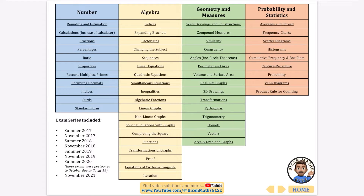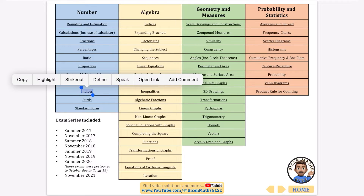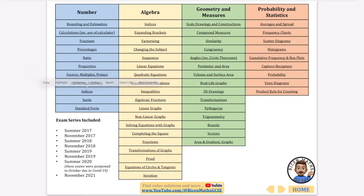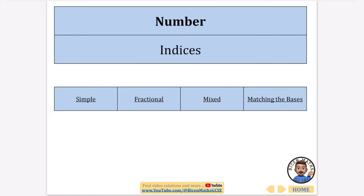I'm continuing with going through every exam question that has ever been asked. In this one we're going through indices — this is indices in the number topic, though it does come up again in the algebra topic. If you want this document it's linked in the description. I've broken it down into different sections: simple, fractional, mixed, and then matching the bases, which is probably the hardest part.